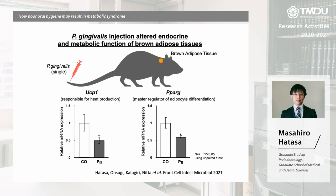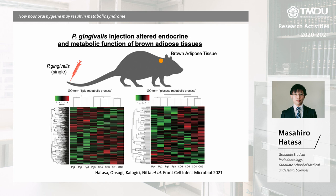Comprehensive gene expression analysis also indicates that lipid and glucose metabolic processes were completely different after P. gingivalis injection, which shows a piece of the mechanism of how periodontal disease affects obesity.